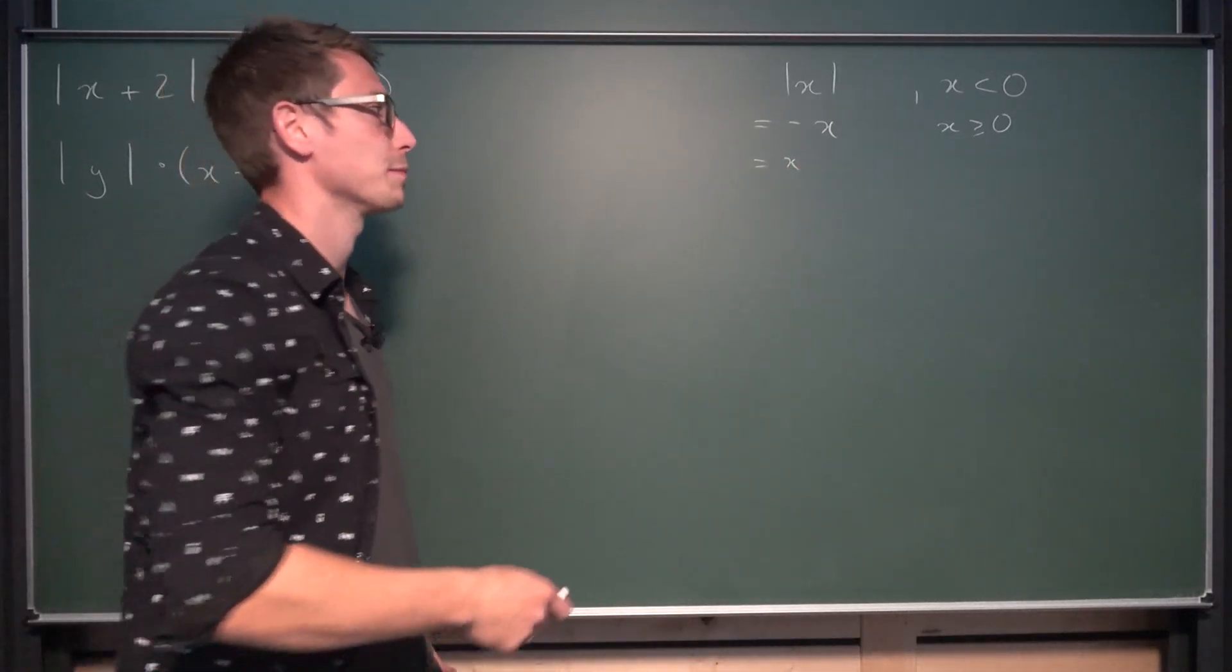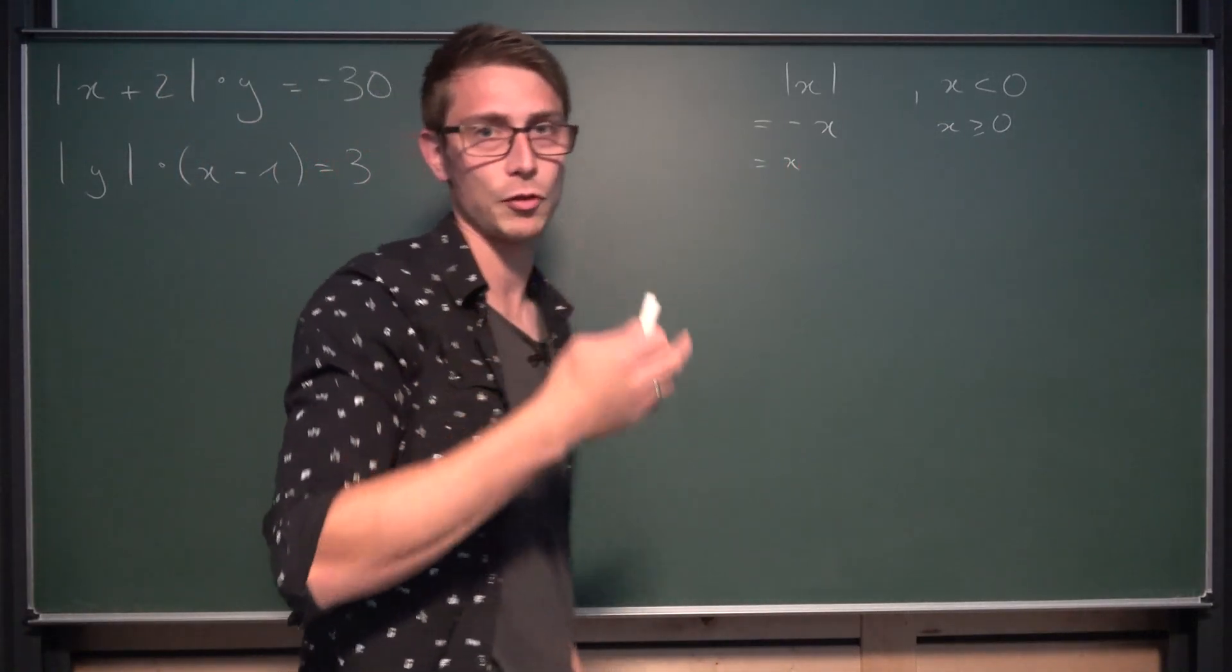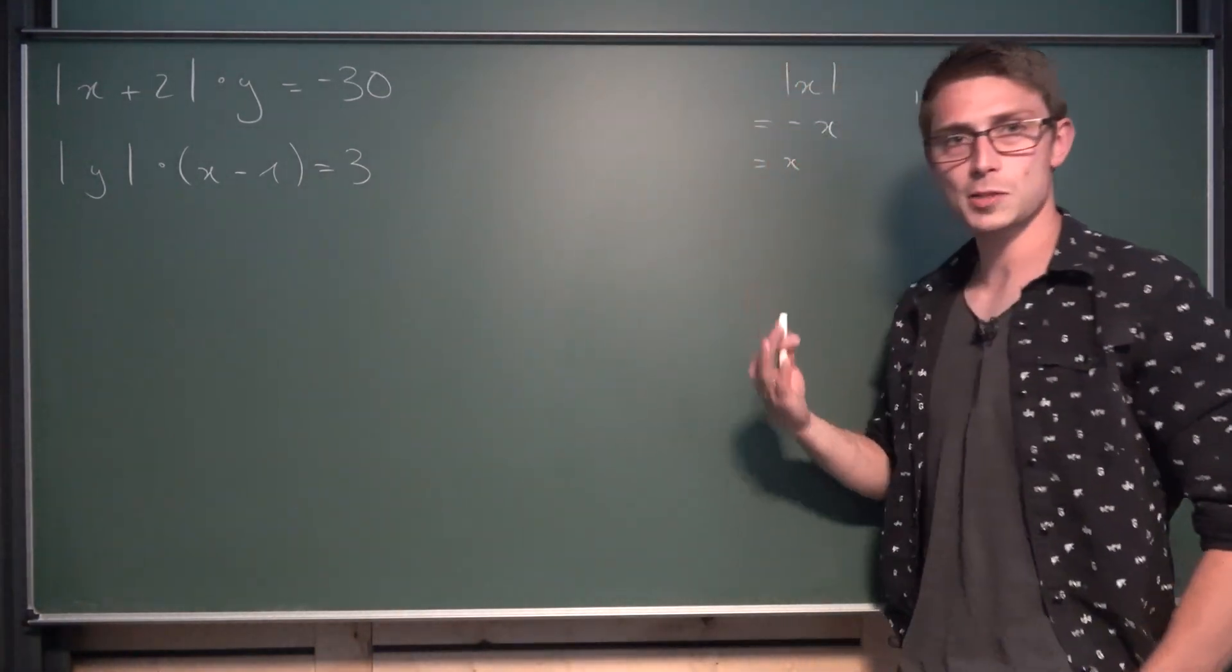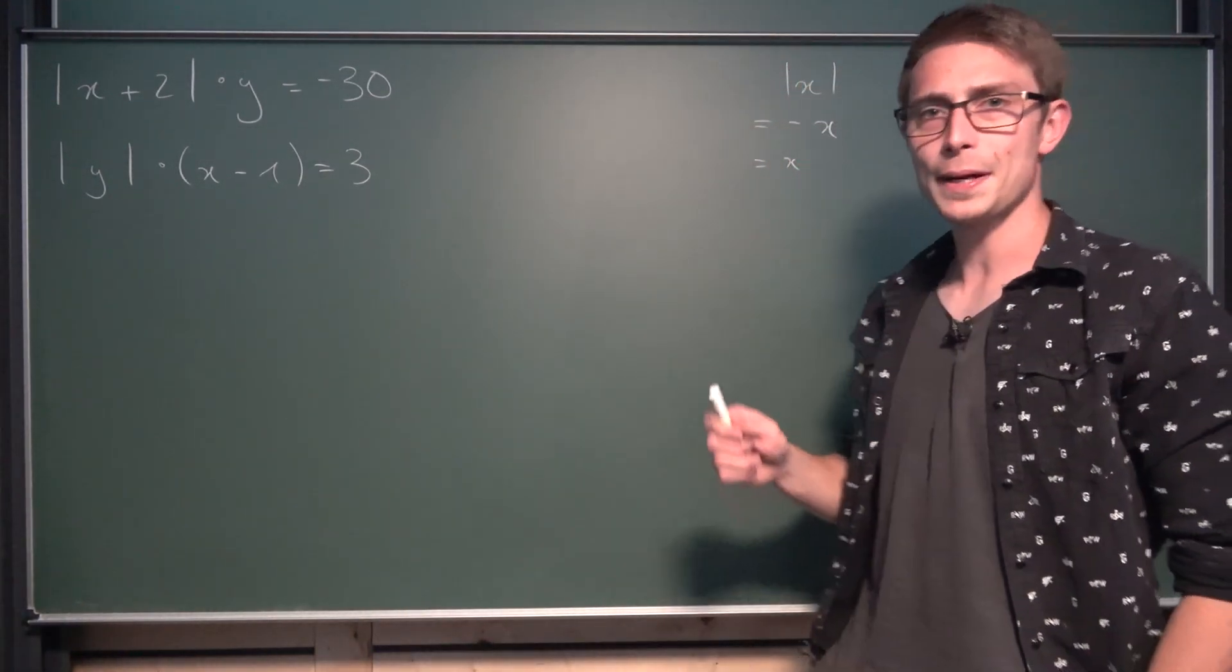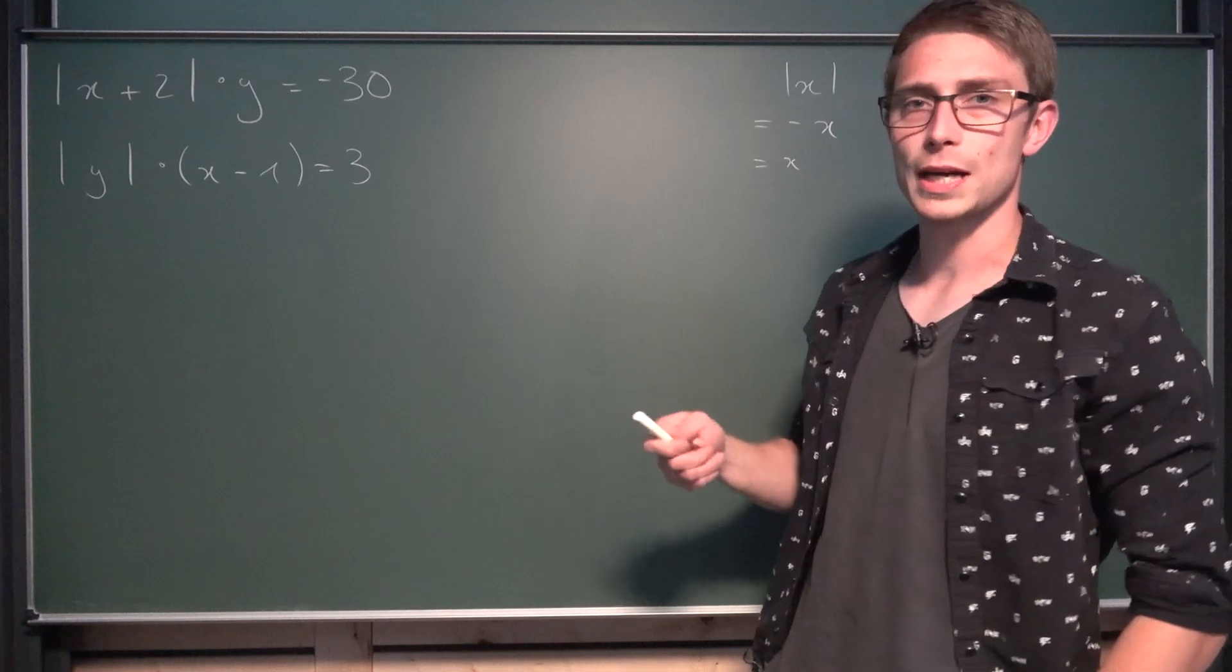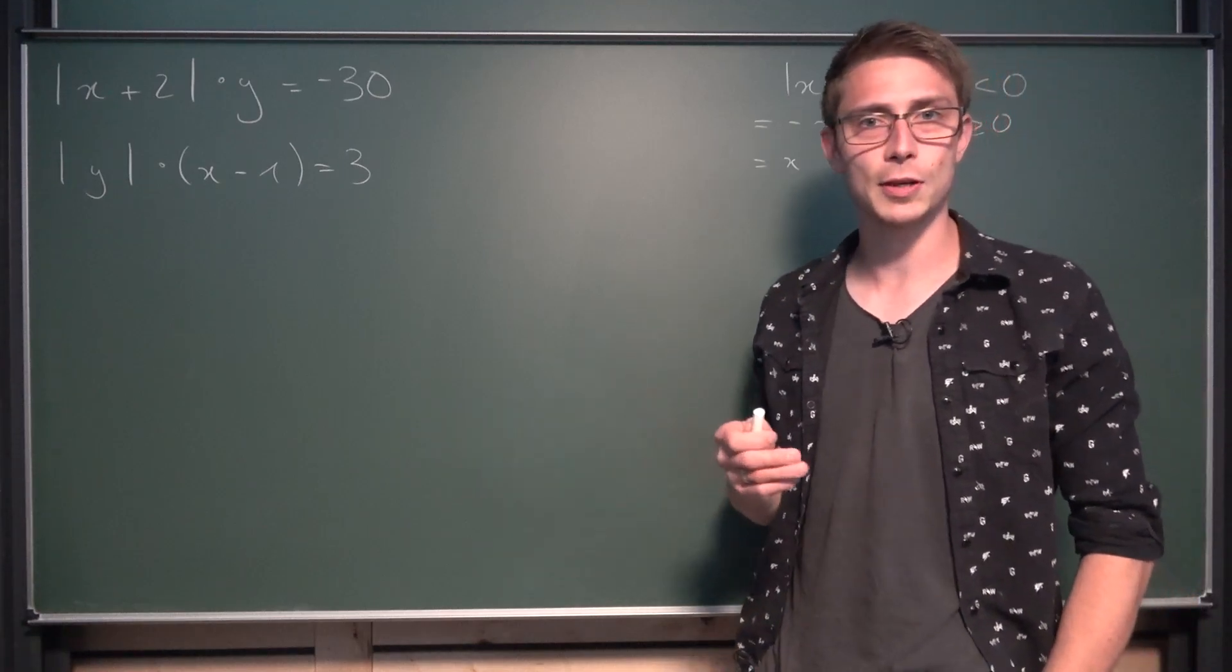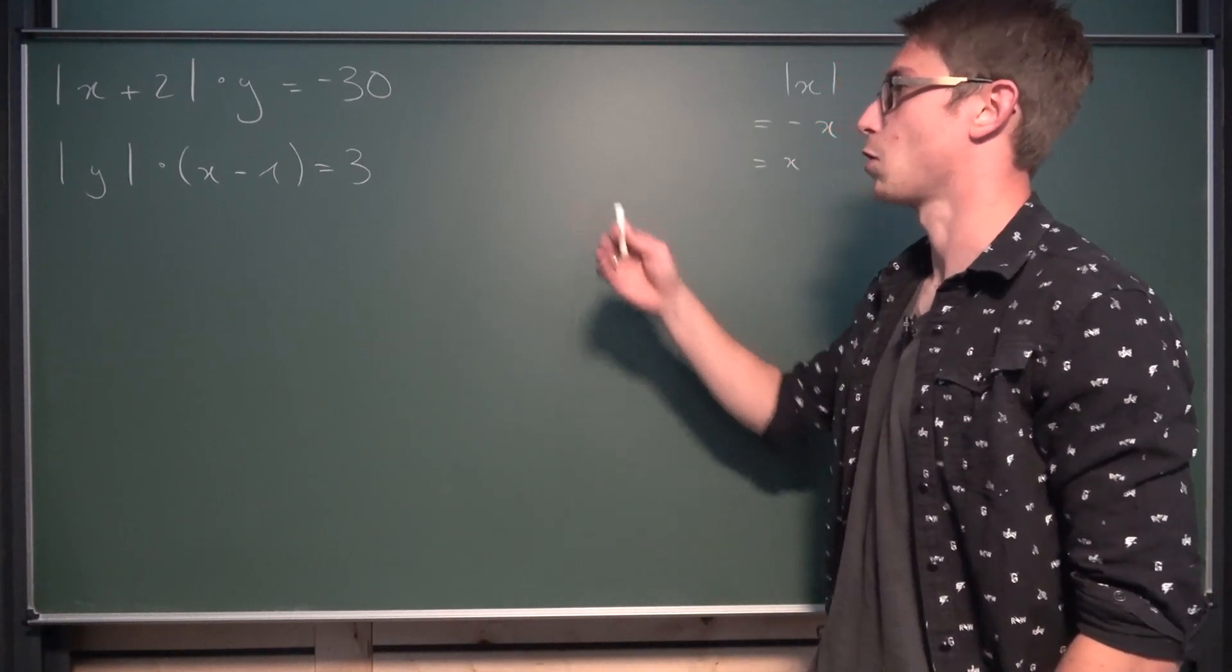And if x is greater than or equal to 0, you could go both ways, then it's just equal to x. Obviously, because the absolute value of positive numbers is just a positive number itself. Now, this would be the case work that you would normally go through. But before we do that, let us take a look at the equations individually and see if we can extract some information from those equations.